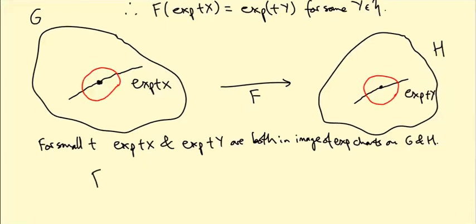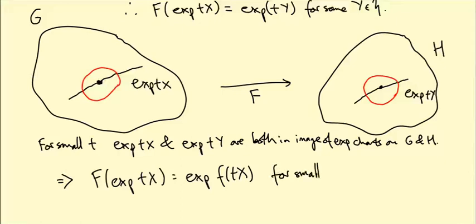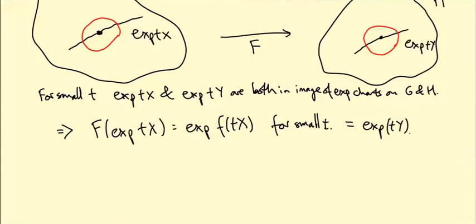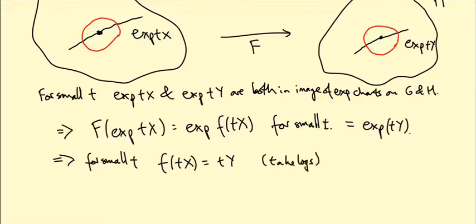For small t, we have F(exp(tX)) = exp(little f(tX)), by definition of little f as log∘F∘exp. Comparing with our earlier result, this also equals exp(tY). So for small t we can take logarithms of both sides and conclude that little f(tX) = tY.